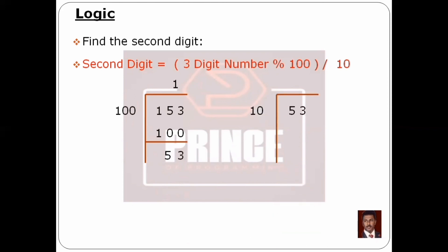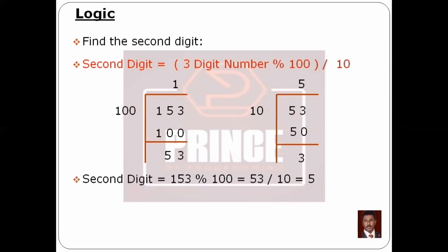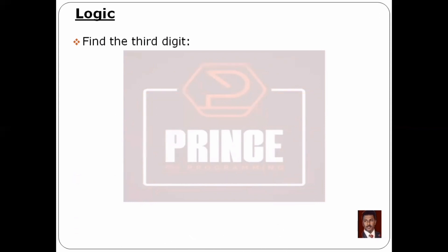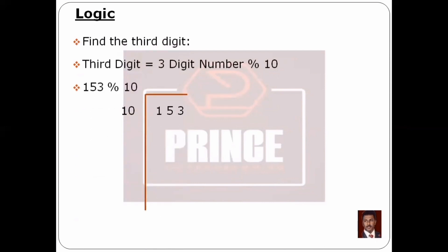For the next number, we perform the division and take the quotient as 5. For the third digit, we take the 2-digit number 53, perform modulus operation dividing by 10, and the remainder is 3. So the third digit is separated.